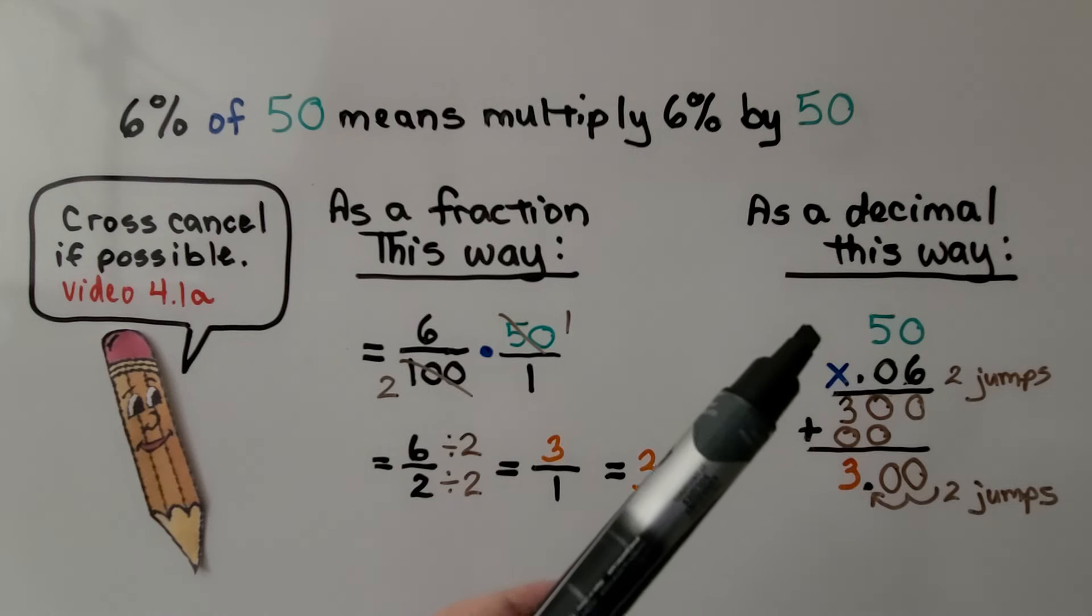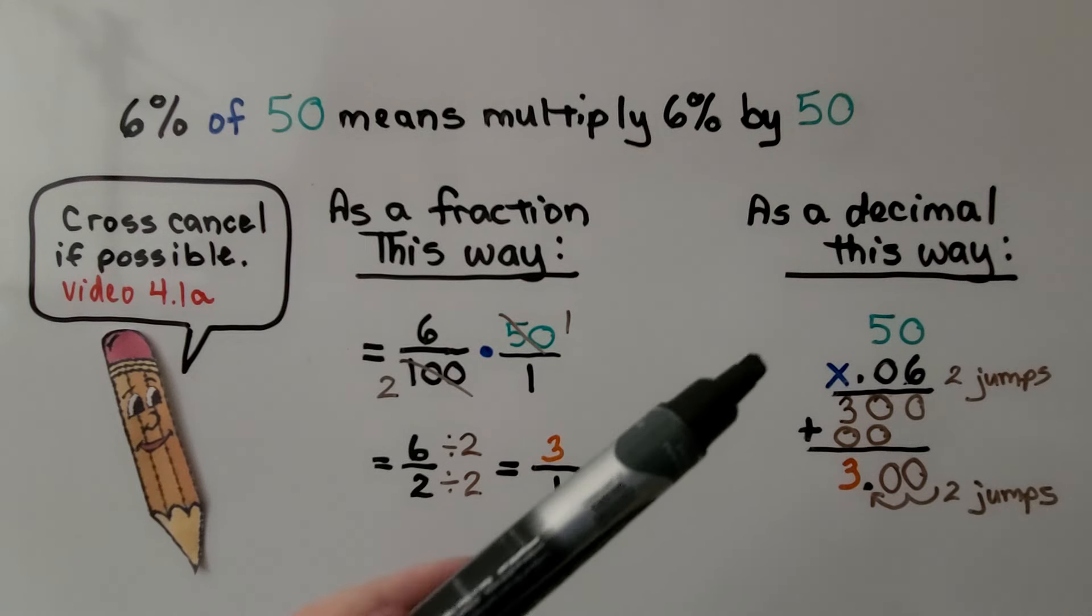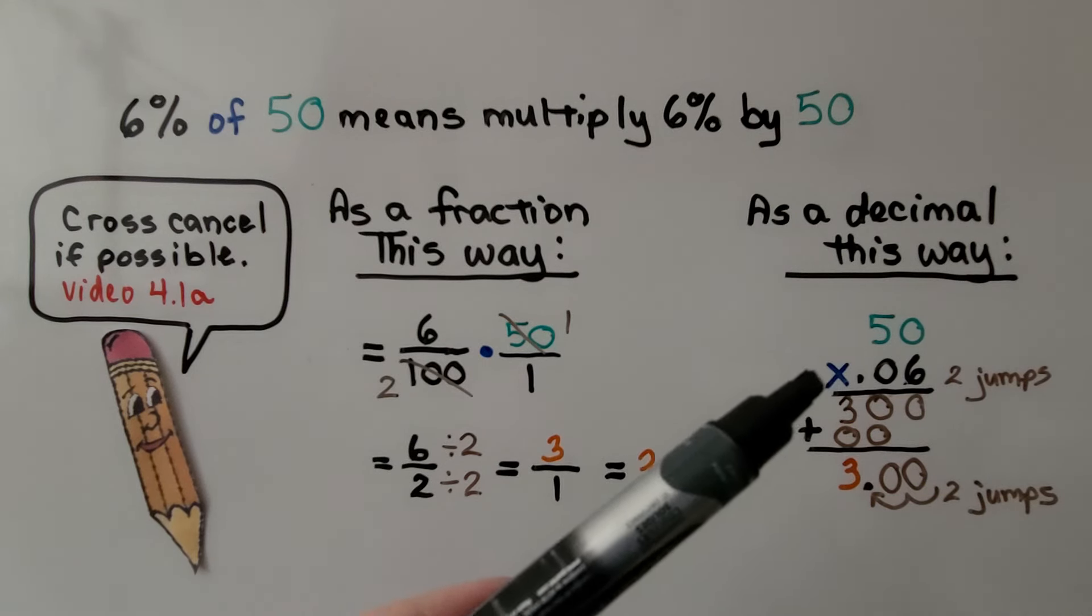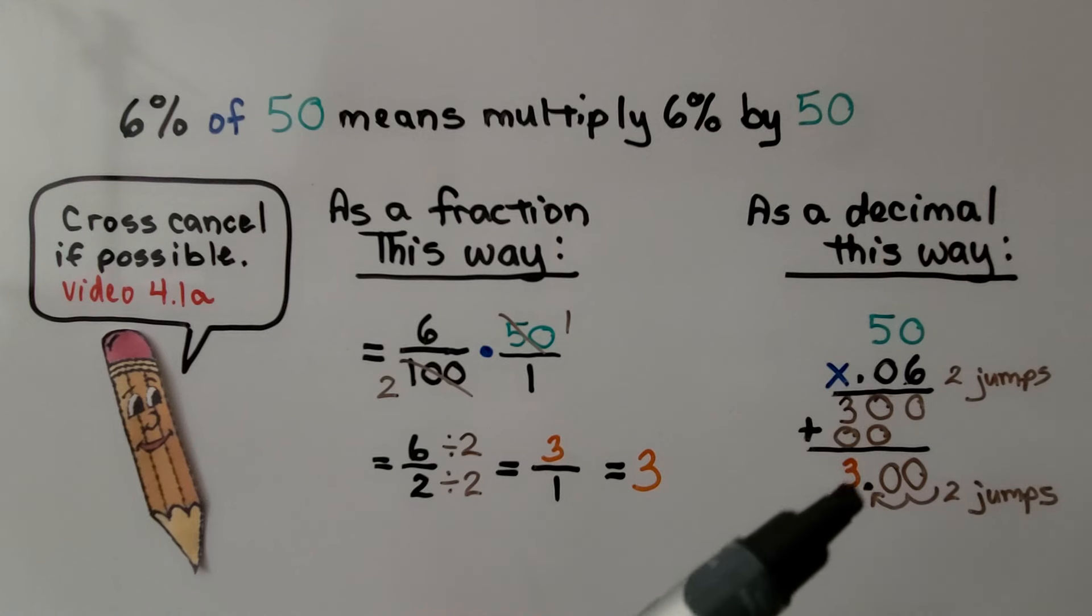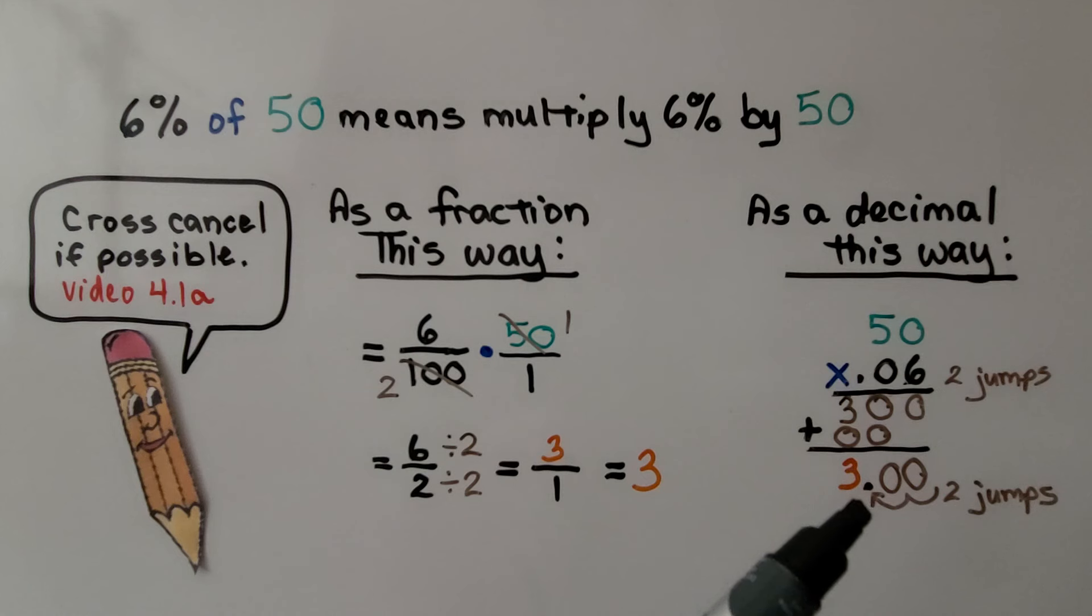We can also do it as a decimal. We have 6% of 50. We're going to multiply 50 times 0.06, and we have two jumps in the equation. There's two jumps in the product. We get 3 as our missing part.